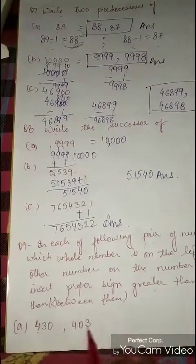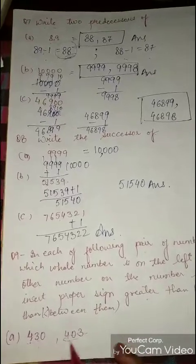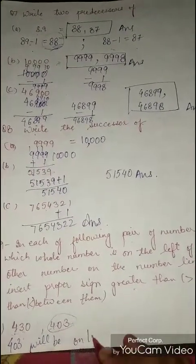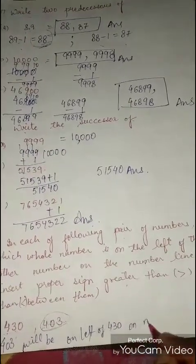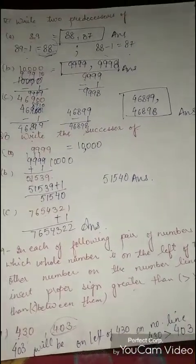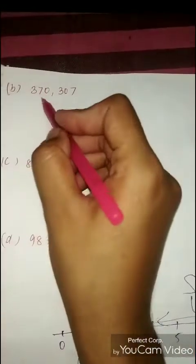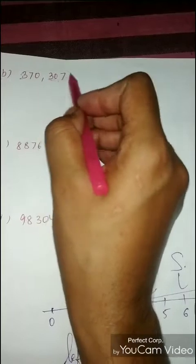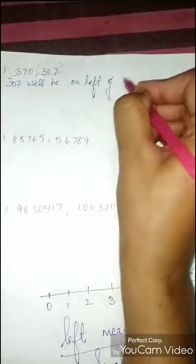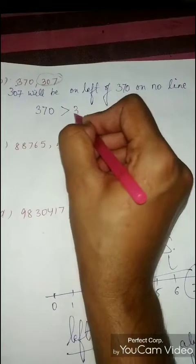For 430 and 403: comparing the tens digit, 0 is smaller than 3, so 403 is smaller. Therefore 403 is on the left of 430 on the number line, and 430 is greater than 403. For 370 and 307: 307 is smaller, so 307 is on the left of 370 on the number line, and 370 is greater than 307.